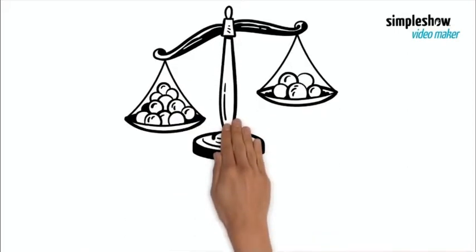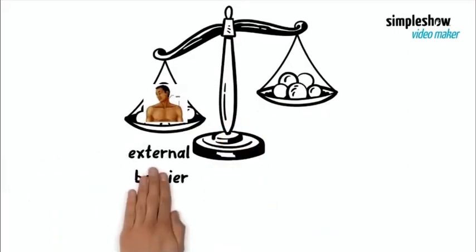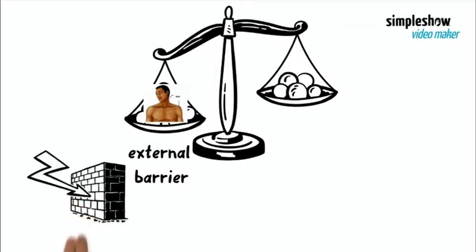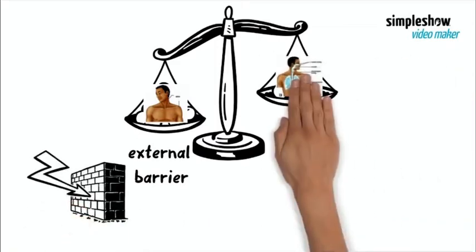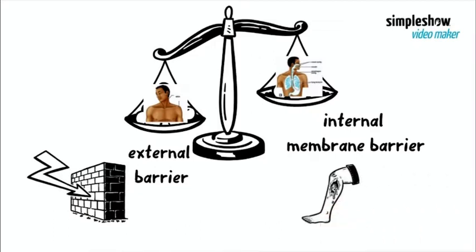In the case of the skin, it is an external barrier with multiple dry protective layers, which makes it a more formidable barrier compared to internal lining membranes. However, when someone is wounded or burned, the risk of infection is higher because the external skin barrier is breached.